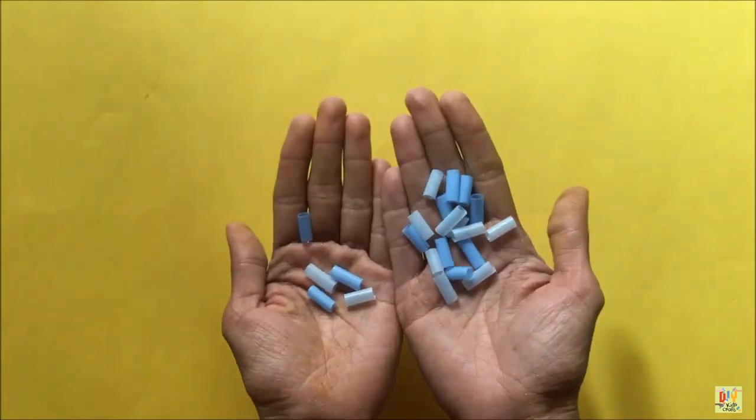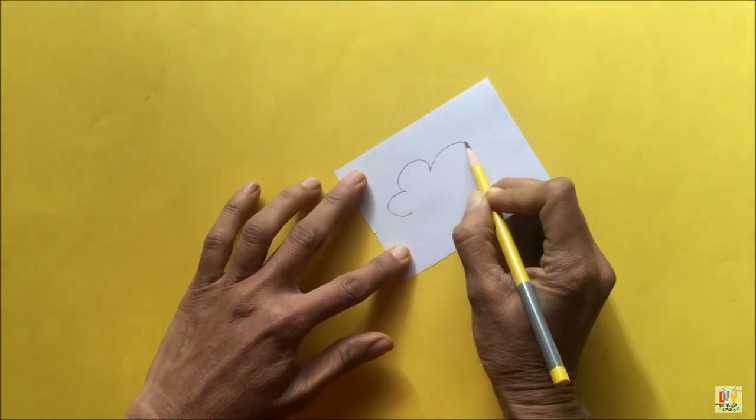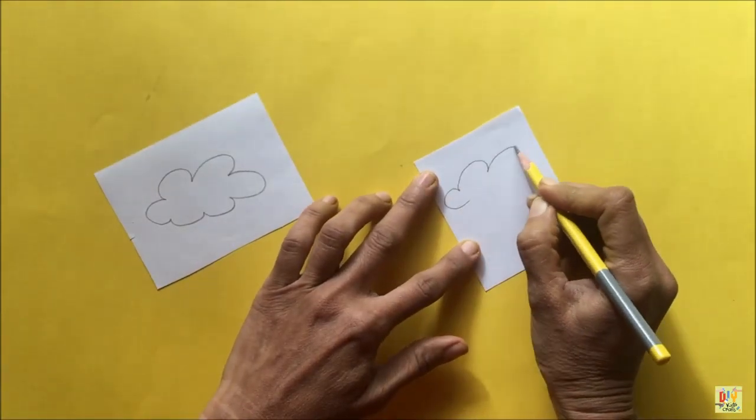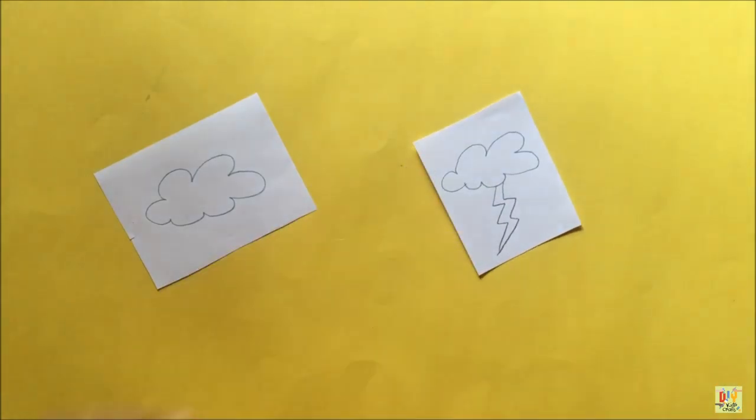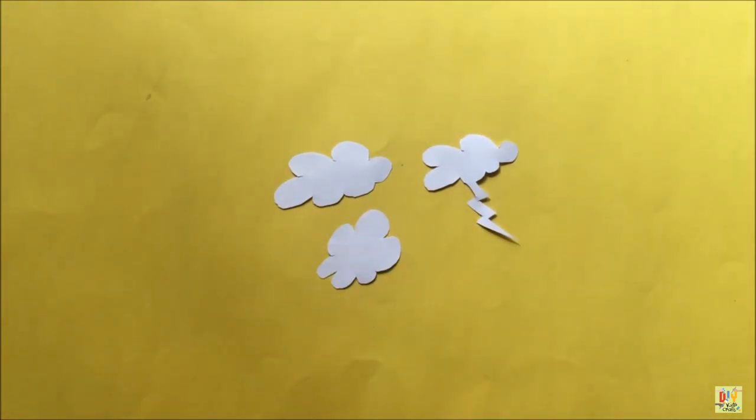Alright! Get a white paper and draw a cloud in it. Then, cut it using a scissor. We're almost done making our paper umbrella.